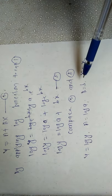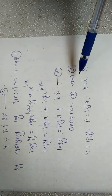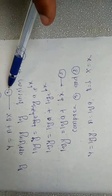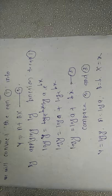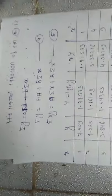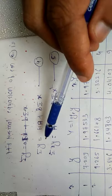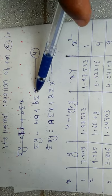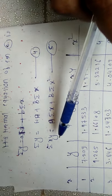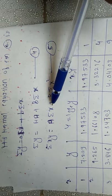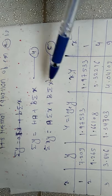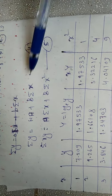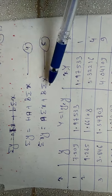We already know that the normal equations of equation number two are: summation Y is equal to n times A plus b times summation of x — this is equation four — and summation of xY is equal to A times summation of x plus b times summation of x squared — this is equation five. These are the normal equations. Remember that.